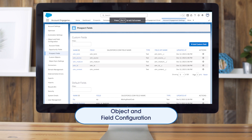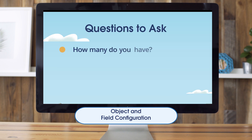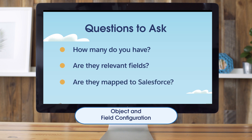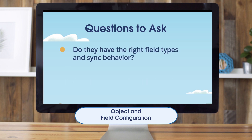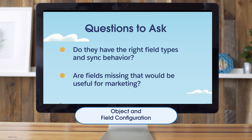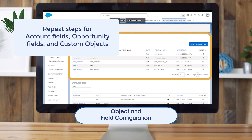Now let's get into object and field configuration. Navigate to the Account Engagement Settings tab, then expand the Object and Field Configuration tab, and then go to Prospect Fields. The first thing you'll want to look for are your custom fields — how many do you have? Are they relevant? Are they mapped to Salesforce? Do they have the right field type and sync behavior? This is a great area for cleanup if you're noticing a lot of unused fields. You'll repeat these steps for account fields, opportunity fields, and custom objects if custom objects are part of your package.